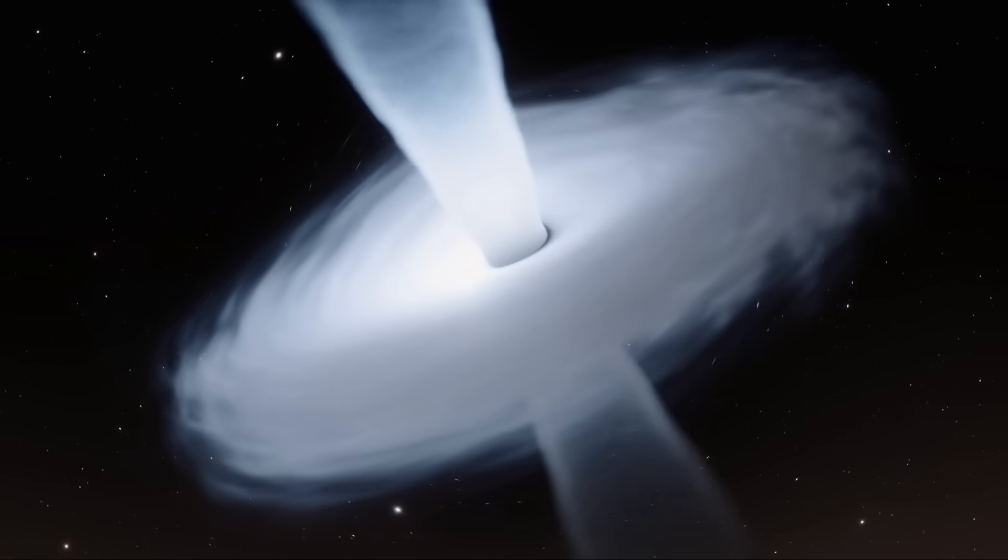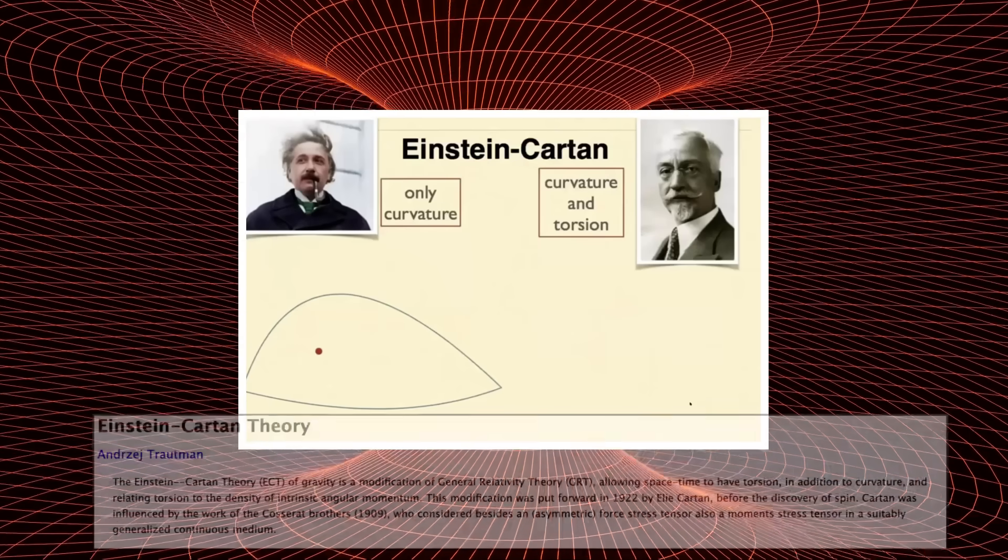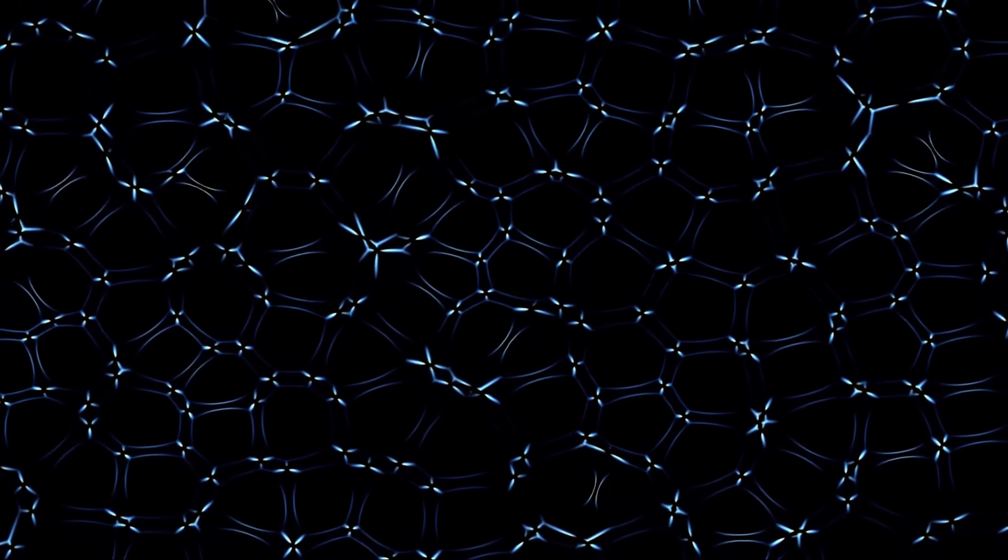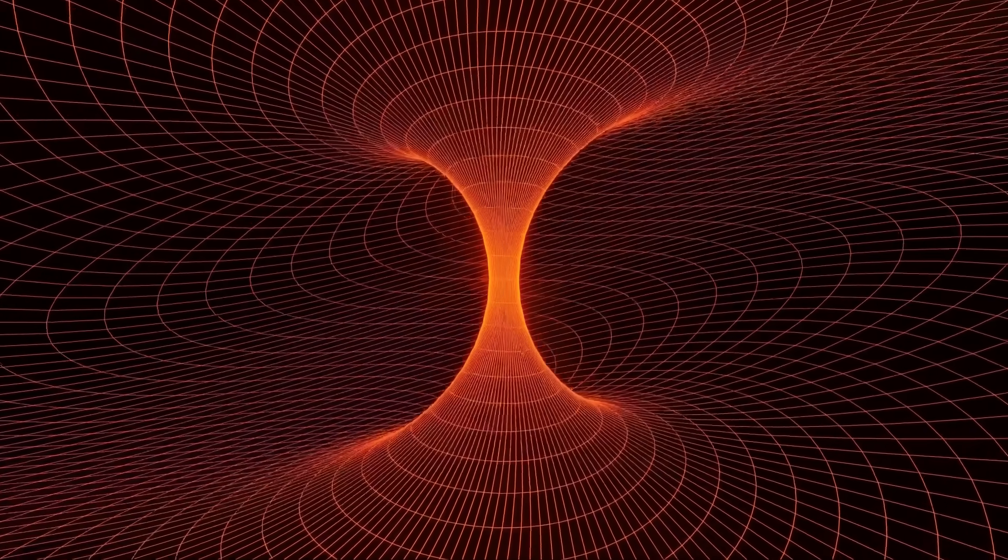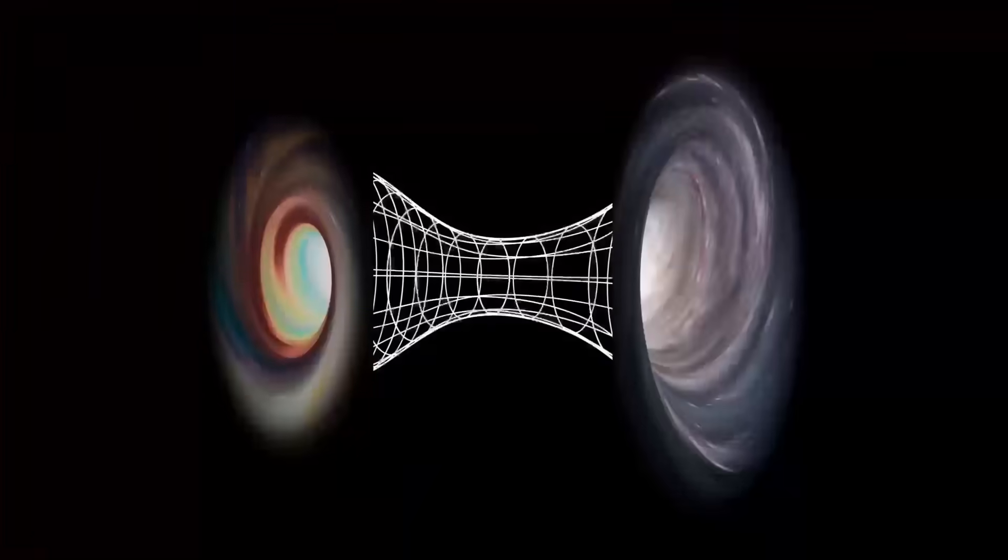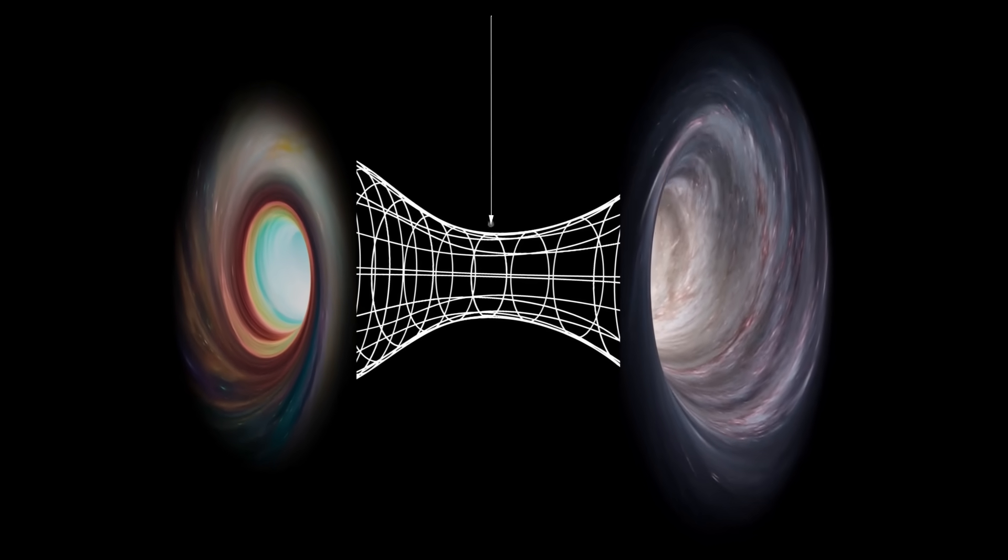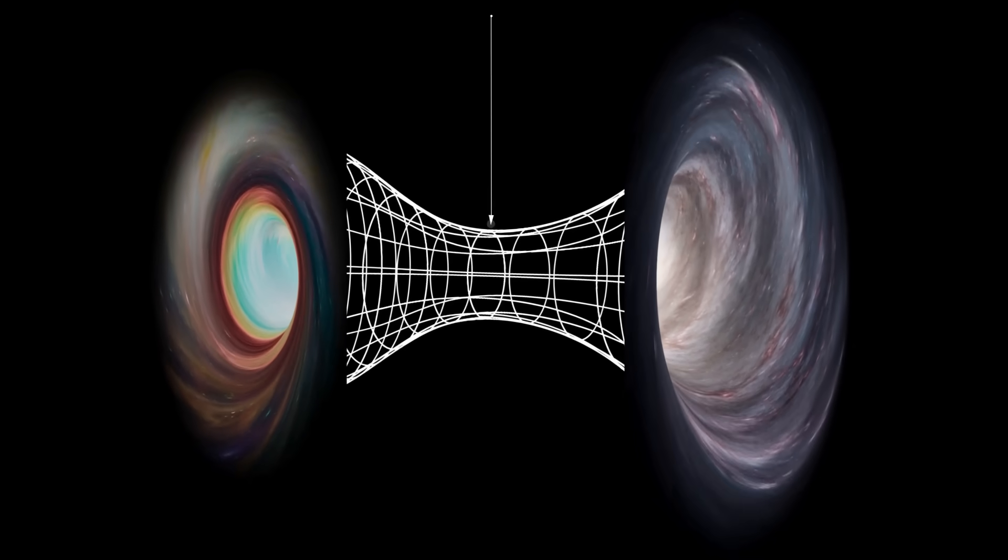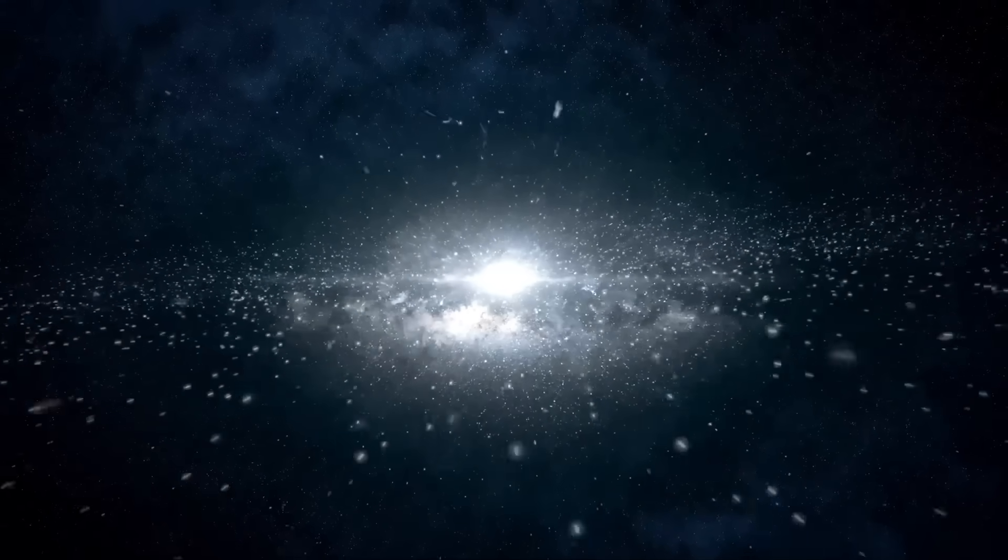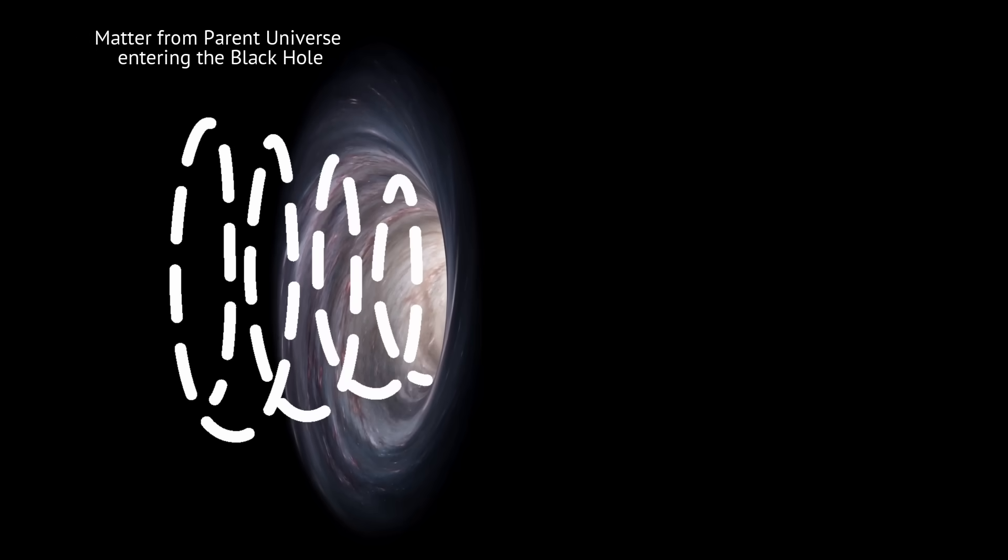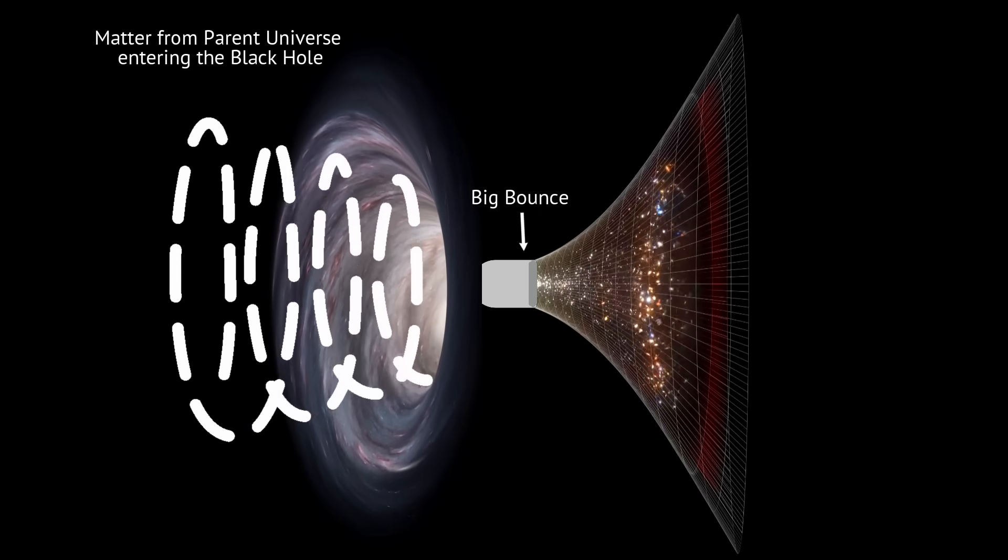Another factor that could play a role in this scenario is torsion. In extended theories of general relativity, such as Einstein-Cartan relativity, torsion is a property that accounts for the intrinsic spin of particles and can influence space-time curvature. Some theories suggest that this twisting effect of space-time could generate a repulsive force at extremely high densities, potentially preventing singularities from forming. In that scenario, instead of collapsing into an infinitely small point, a black hole could experience a big bounce, where the core rebounds and expands outward, potentially giving rise to a new universe inside.